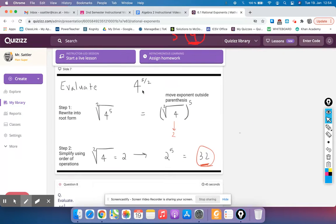Okay. Another example, same thing. 4 to the 5 halves. Let's rewrite it into root form by moving this numerator, or keeping it essentially where it is, and moving the denominator to the root. And then moving the 5 outside parentheses. So we get the square root of 4, which is 2. And then we just do 2 to the 5th. 2 times 2, 5 times. So we get 32.